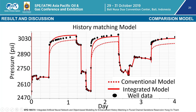By utilizing Eclipse 100, I perform the history matching using well data. You can see the difference between the measured and the simulated values. The integrated model achieves a better match than the conventional model. You can see from the comparison graph between the conventional and integrated model results. However, this covers only short production or short measurement history — so what about the long production history?